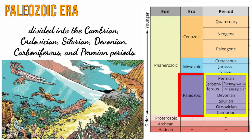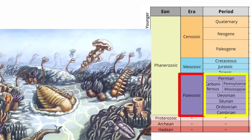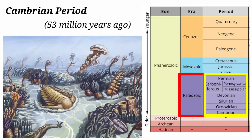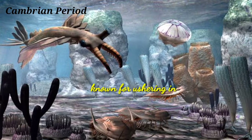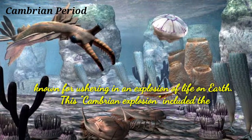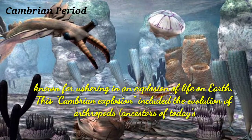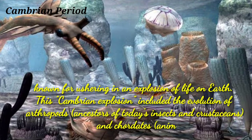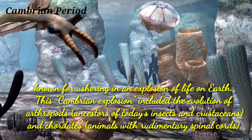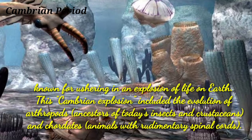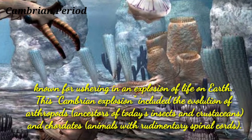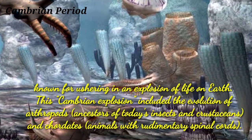The six periods of the Paleozoic era are: the Cambrian period, the Ordovician period, Silurian period, Devonian period, Carboniferous period, and Permian period. The Paleozoic era began with the Cambrian period 542 million years ago. This period is known for ushering in an explosion of life on Earth. The Cambrian explosion included the evolution of arthropods — the ancestors of today's insects and crustaceans — and chordates, animals with rudimentary spinal cords.